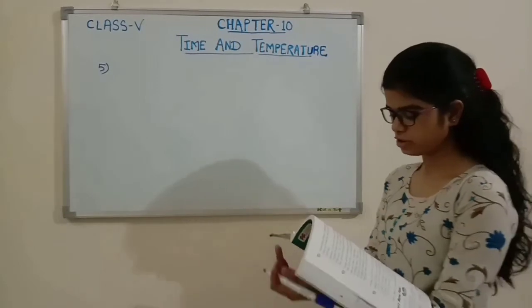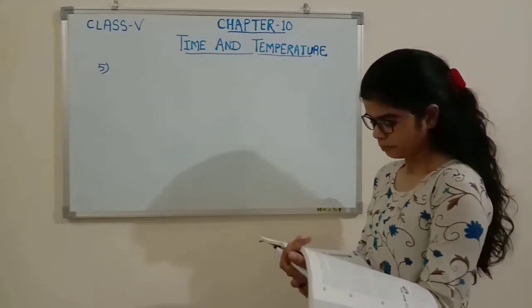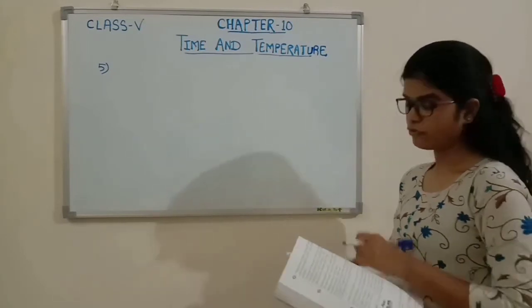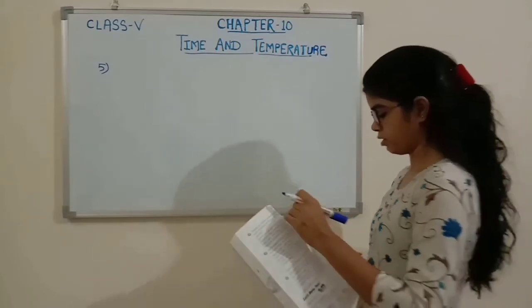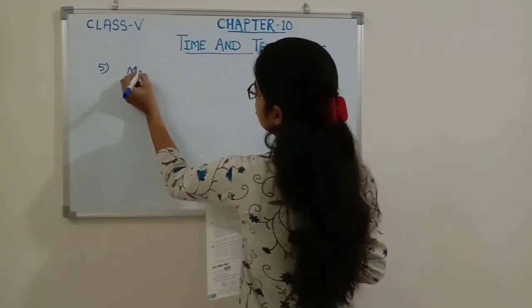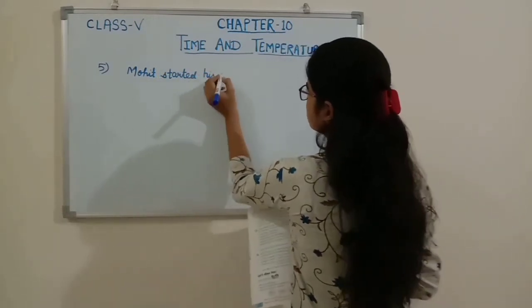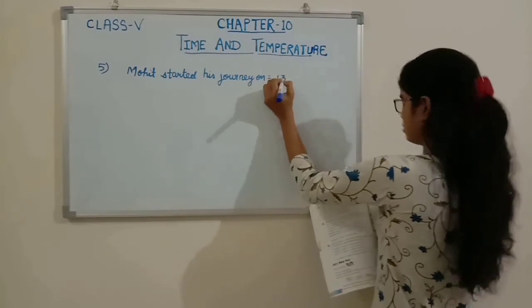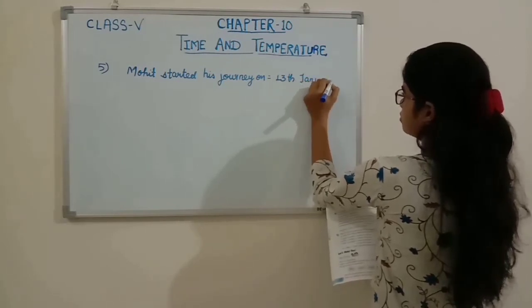Our next question is Question number 5: Mohit went on a tour to Bangalore. He started on 13th of January 2018 and returned on 9th of February 2018. We have to find how long his tour was. Mohit started on 13th of January 2018.